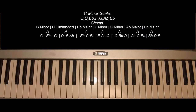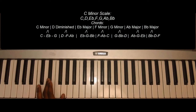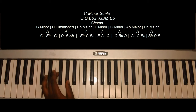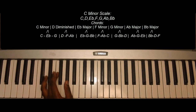The chords of the C minor scale are as follows. C minor: C, E flat, G. D diminished: D, F, A flat.